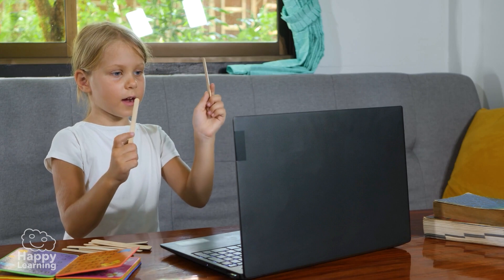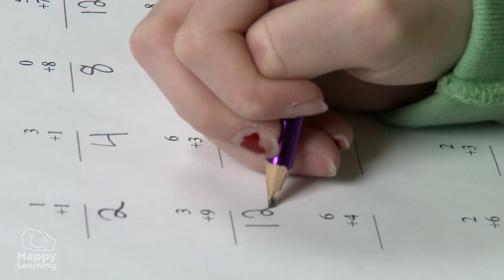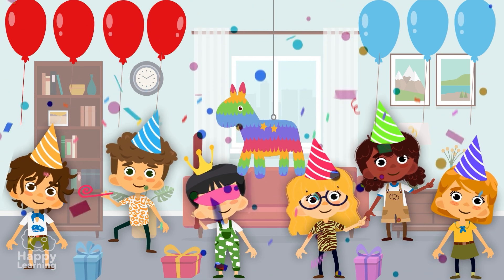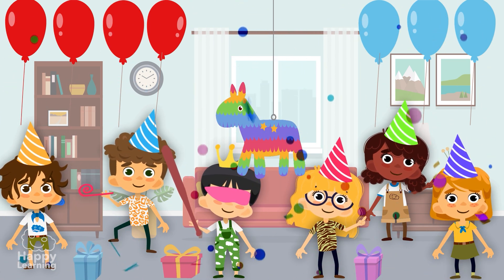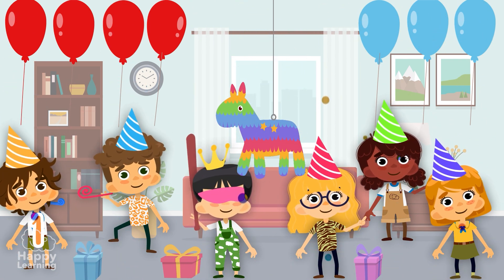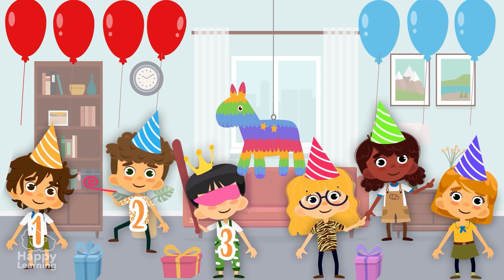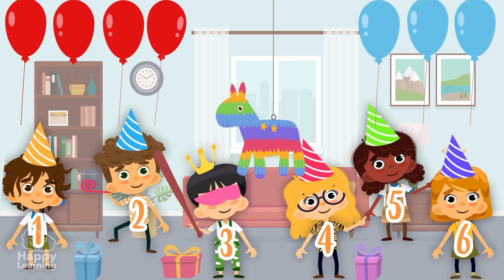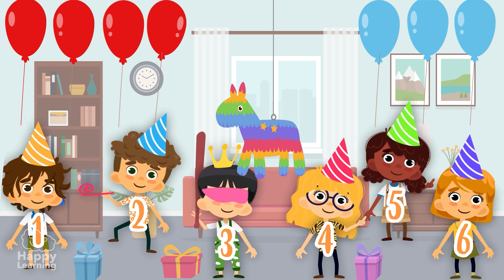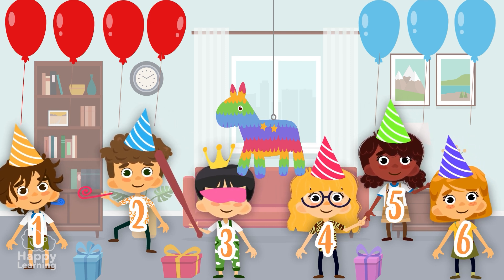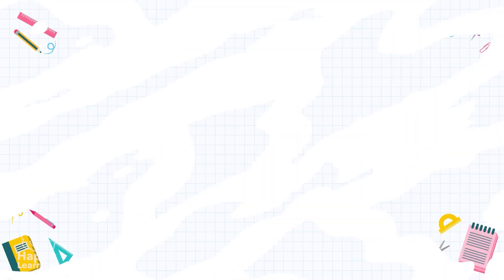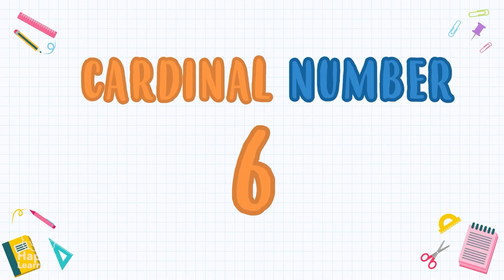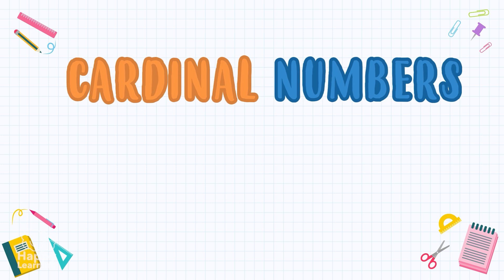Cardinal numbers are the ones we use to count or to do accounts. The Happy Panda is having a birthday party. How many children are there at his party? Let's count them: one, two, three, four, five, and six. There are six children, so we can say the number of children at the party is six. That six is a cardinal number.